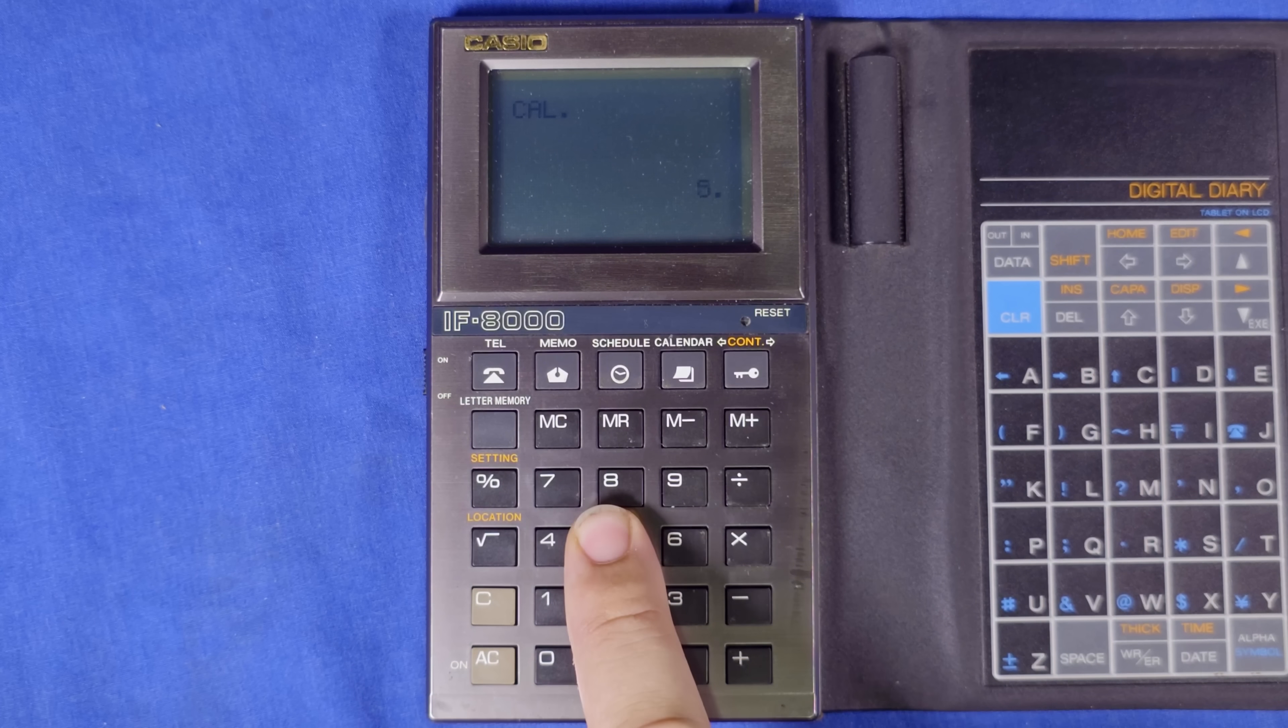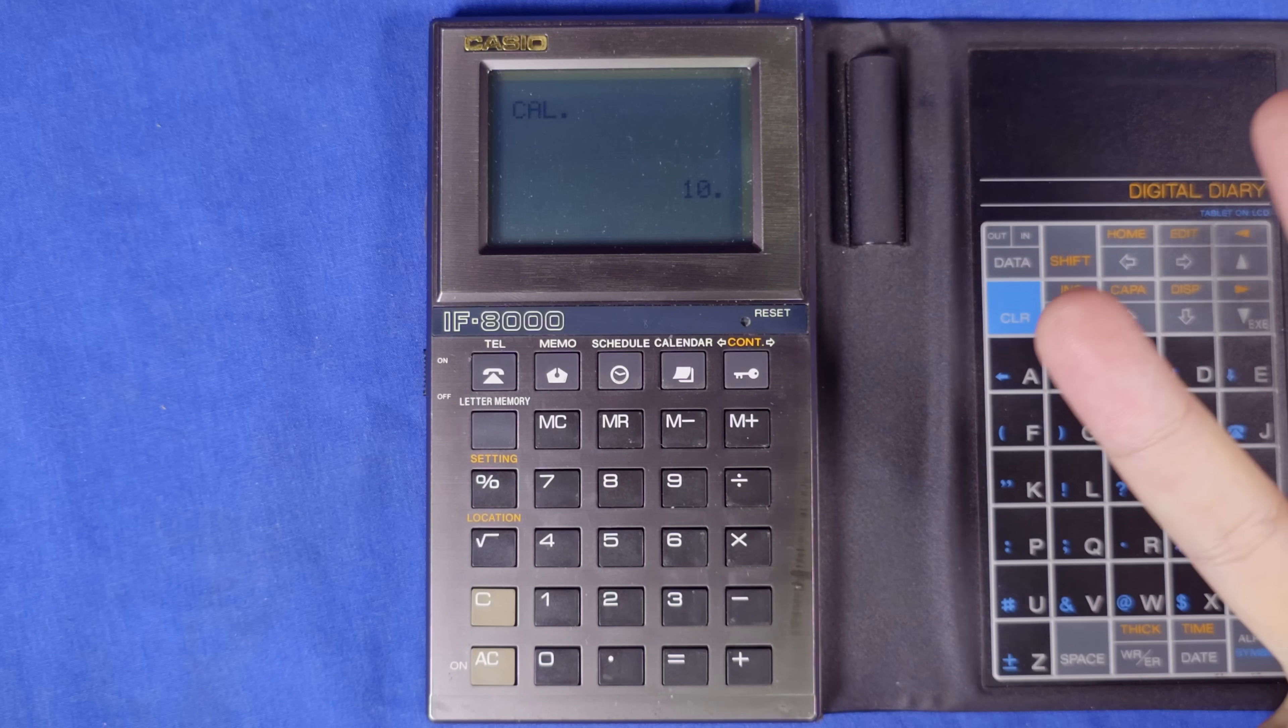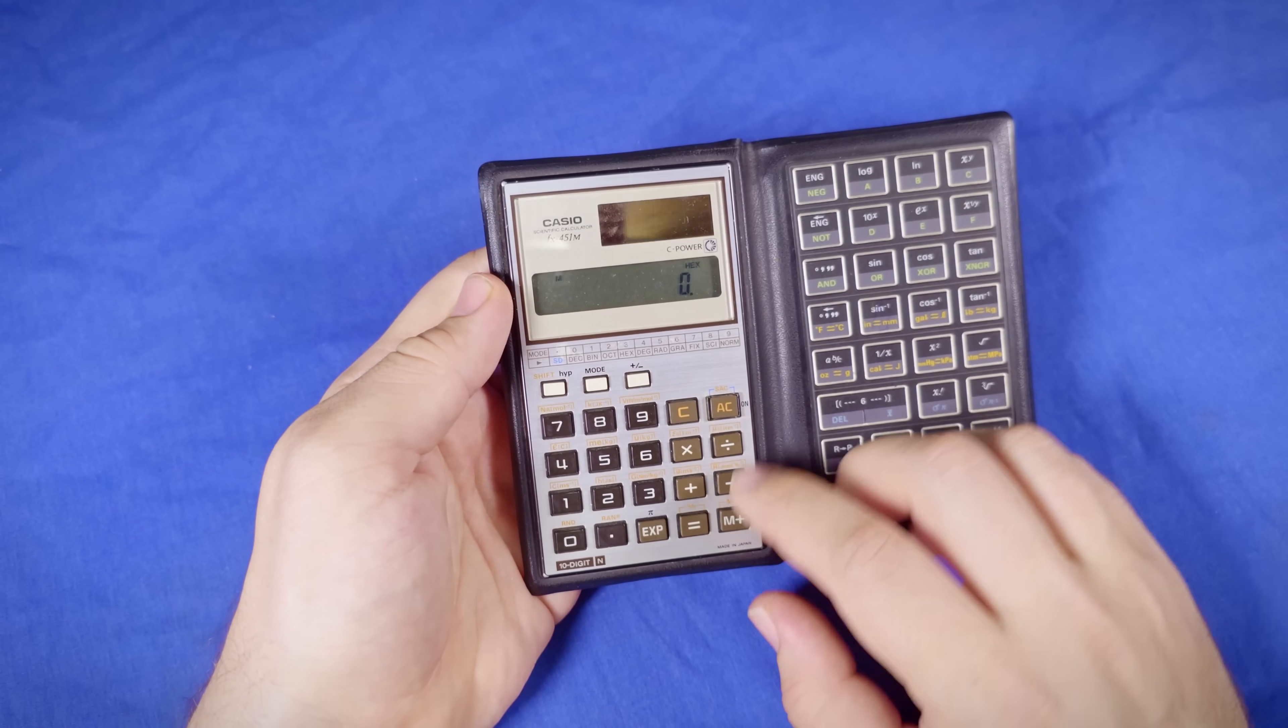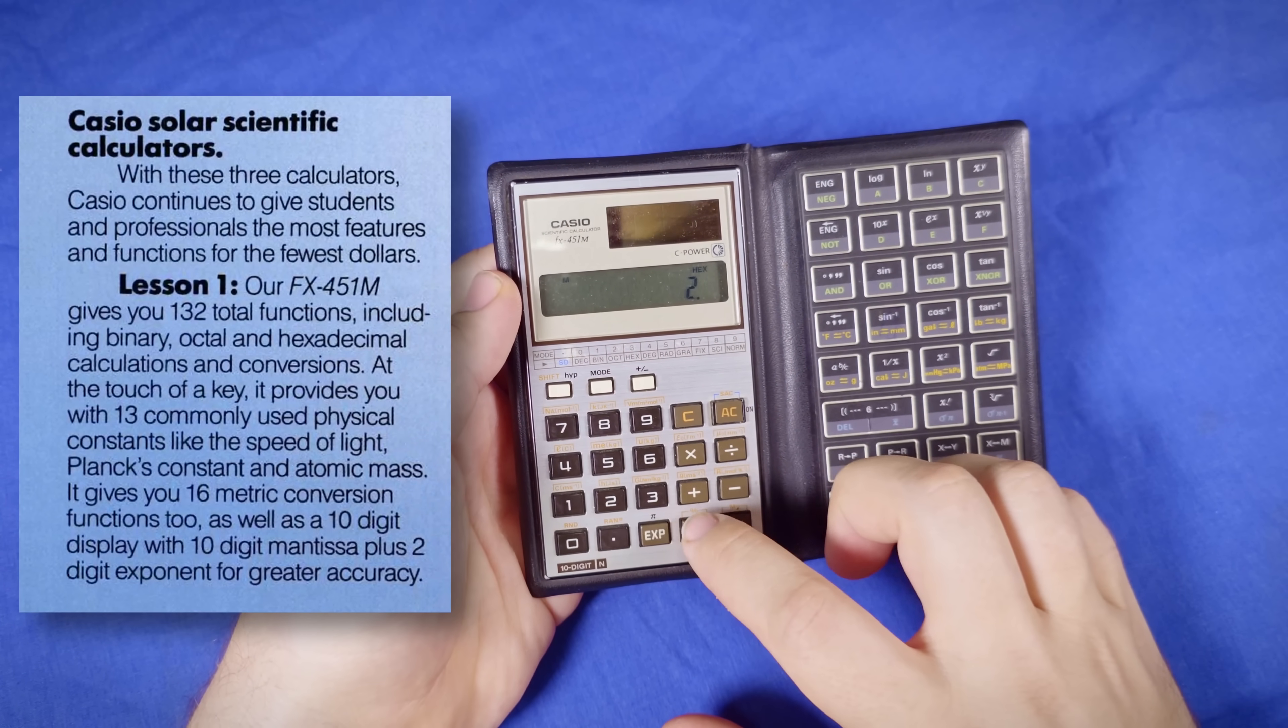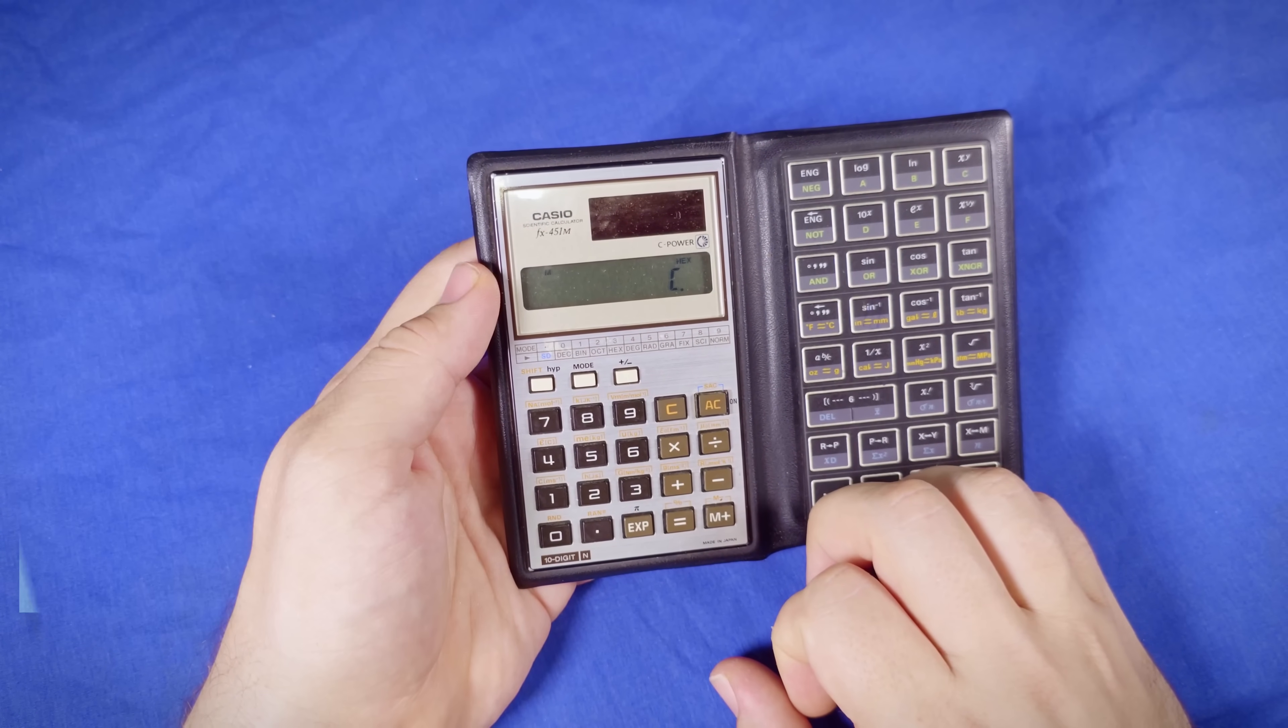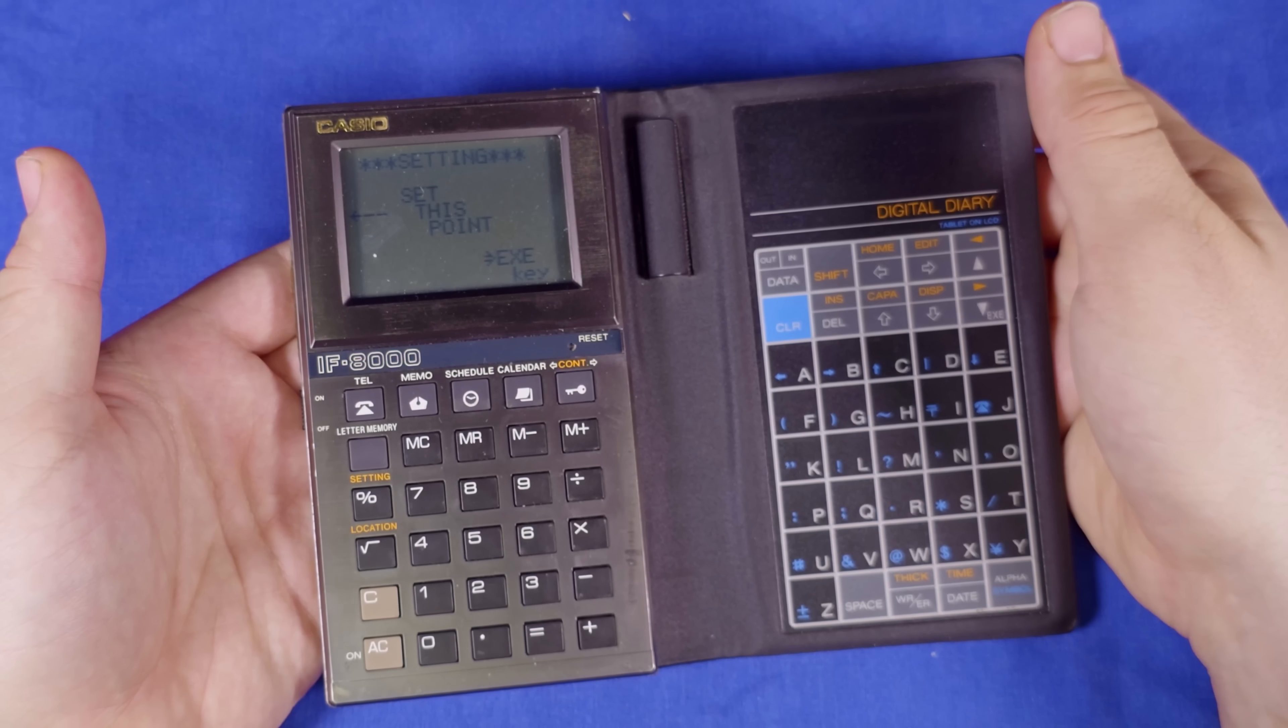And worse is that despite its relatively large and high resolution 96 by 64 pixel display, it will only show a single number on screen at a time. That FX451 from earlier puts this to shame, boasting 132 functions according to its ads.